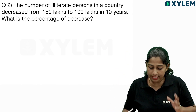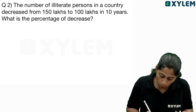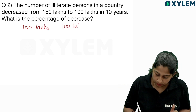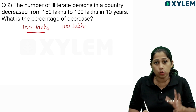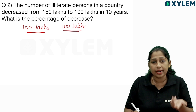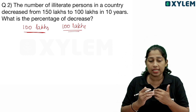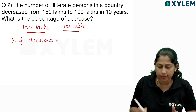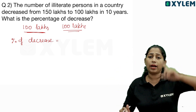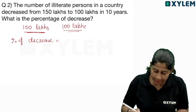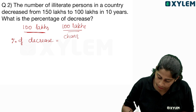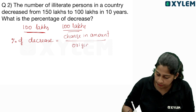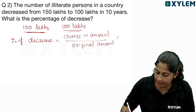The next question: the number of illiterate people in a country decreased from 150 lakhs to 100 lakhs. 150 lakhs is the original amount. What is the percentage of decrease? How much change in amount divided by original amount into 100 — same equation.